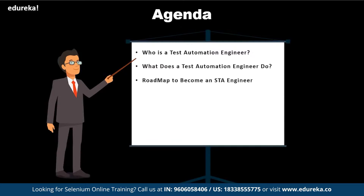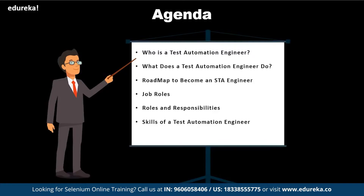Next up, we will have a look at the roadmap to become a test automation engineer, and then we will know about the various job roles and required skills for an automation engineer. Then we will move on to the various roles and responsibilities and the skills you must have. Finally, we will have a look at the various companies hiring test automation engineers.